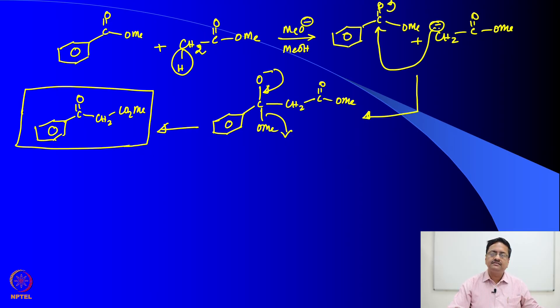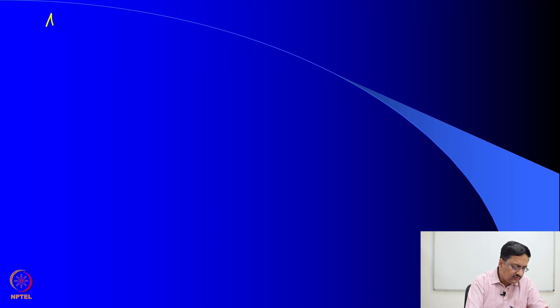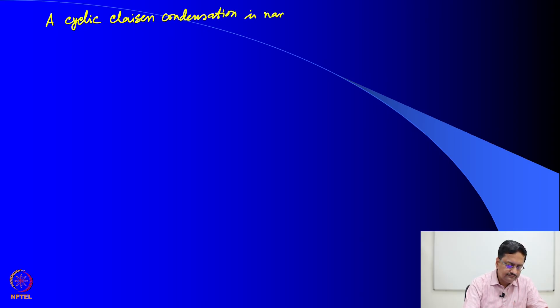There are certain variations of this Claisen condensation reaction. When you try to do a Claisen condensation reaction in a cyclic manner — that is, a cyclization reaction through Claisen condensation — then it is called a Dieckmann reaction. A cyclic Claisen condensation is named the Dieckmann reaction.